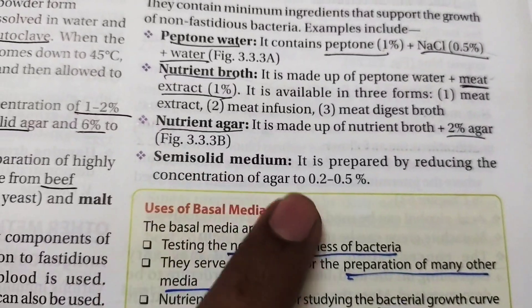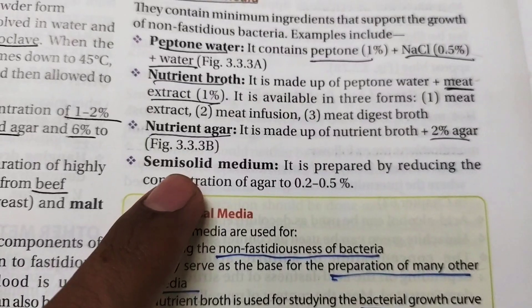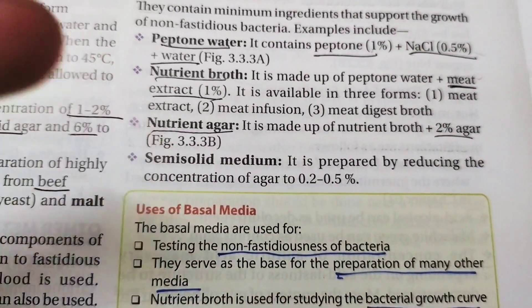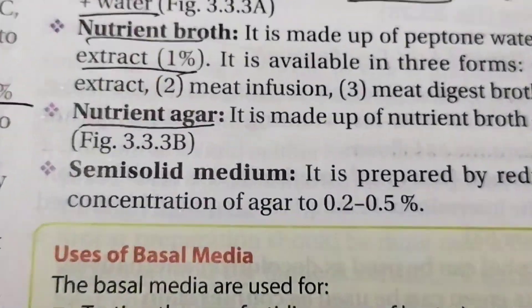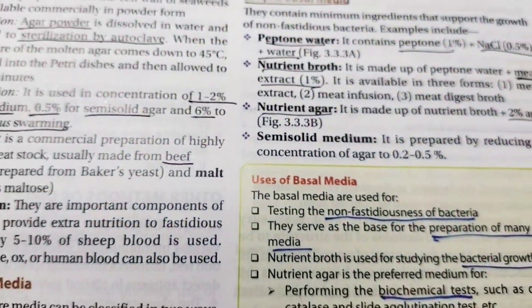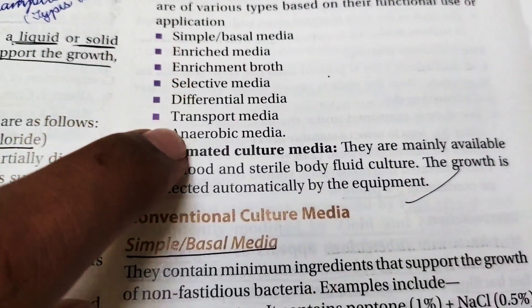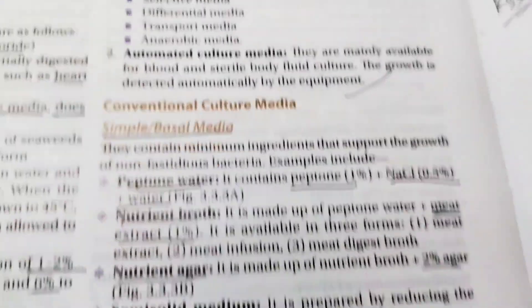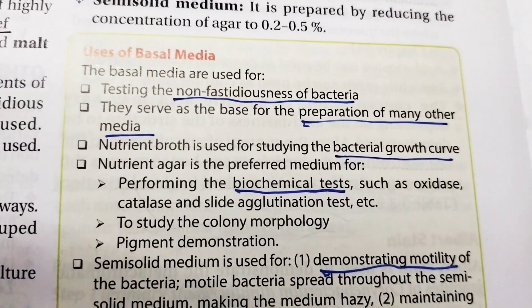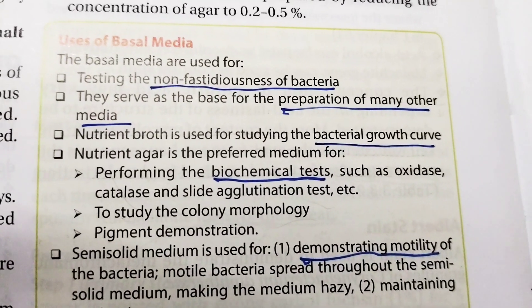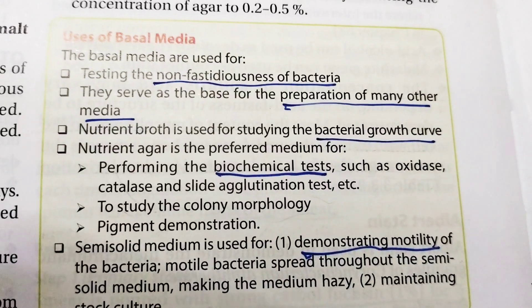Semi-solid medium is made by adding 0.2 to 0.5% agar to the broth. If we add more agar it becomes nutrient agar. If we don't add agar at all it remains as broth. Simple basal media helps in creating all other media such as enriched, enrichment, and others. Its uses include testing the non-fastidiousness of bacteria and serving as a base for preparation of many other cultural media. It is also used for bacterial growth curve studies.